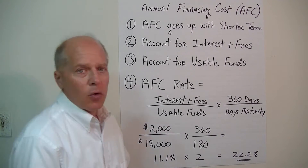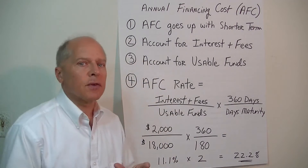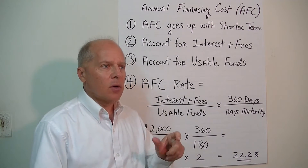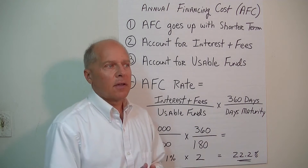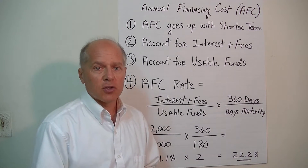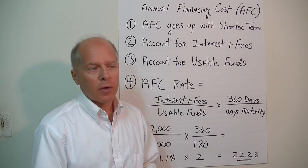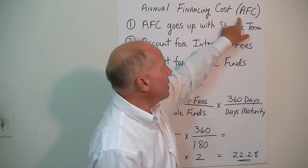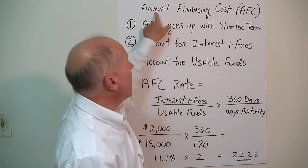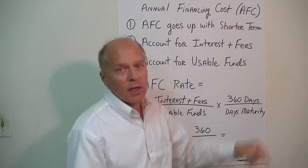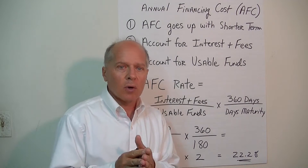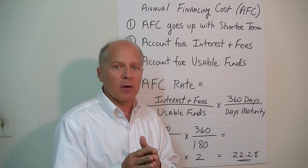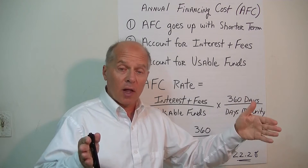In this lesson we're going to introduce a specific term and calculation: annual financing cost — the annual financing cost of short-term borrowing with the bank. We'll abbreviate that AFC. What that means is all short-term borrowing, regardless of the term of maturity, will all be compared on an annualized basis.